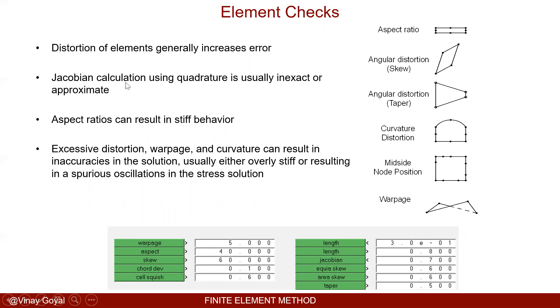Distortion of the elements generally increases the error. The Jacobian calculation using quadrature is usually inexact or approximate. That's the issue, is that this Jacobian calculation is just an inexact or approximate solution.